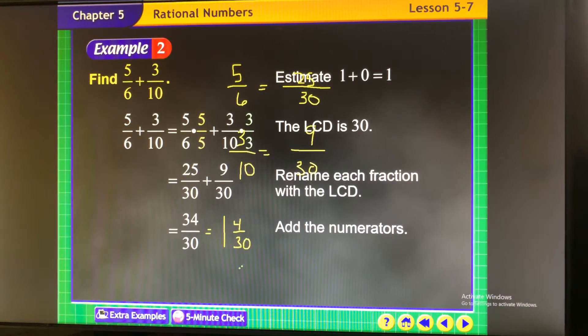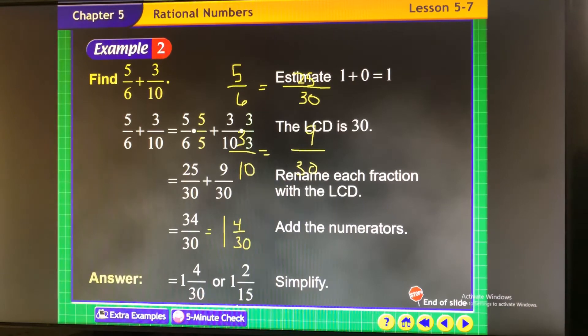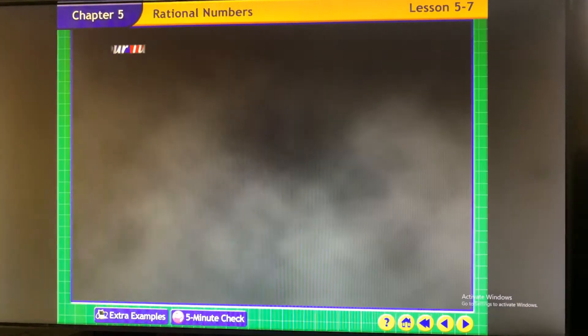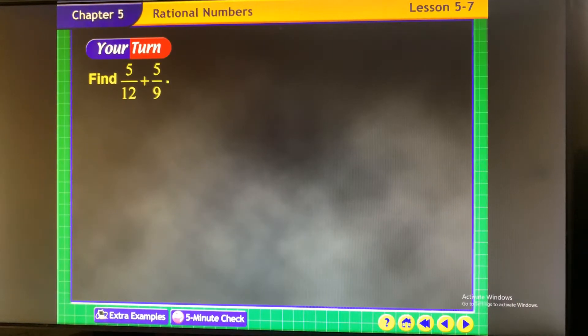And then I'm going to go ahead and simplify 4 thirtieths to be 2 fifteenths. Find your common denominator.